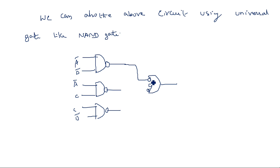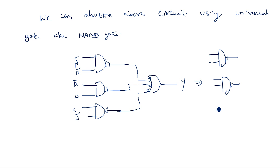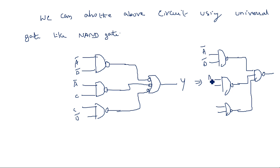The two bubbles cancel each other and directly give the true form through. That is why simply this OR gate can be converted into a NAND gate. This is the final circuit implemented entirely with NAND gates. The same circuit can also be converted into a NOR gate implementation by converting each gate into NOR. Thank you.